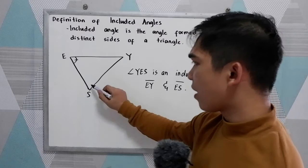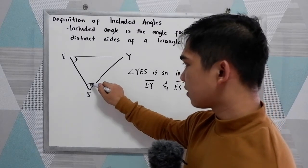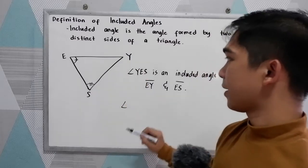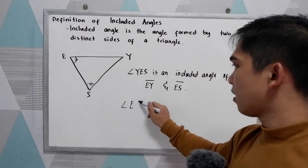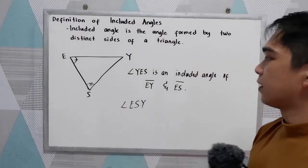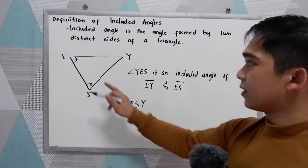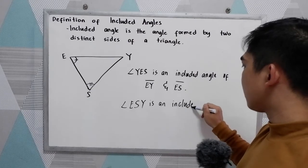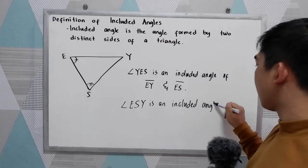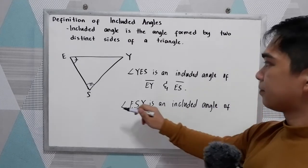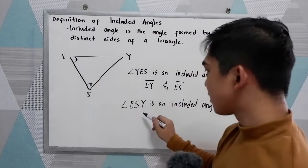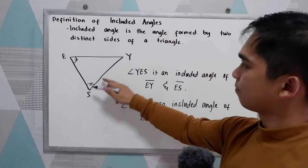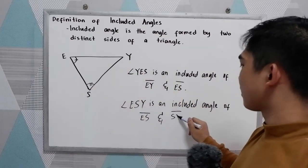Let's say we have angle ESY, E-S-Y. Angle ESY is an included angle of side ES and side SY.